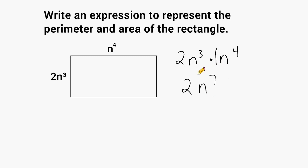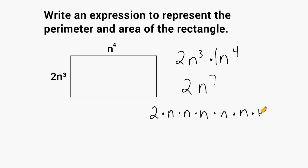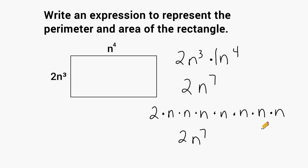Another way to see this is to write everything in expanded form. Instead of 2n to the third, write two times n times n times n; and for n to the fourth, continue with n times n times n times n, since n to the fourth means multiplying n by itself four times and n to the third means three times. Multiplying all of these together, we can clearly see n appears seven times, confirming the result is 2n to the seventh power.